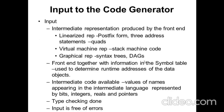Now we will see the input to the code generator. The output of the code optimizer is the optimized three-address statements, which are given as input to your code generator. So the input to the code generator is the intermediate representation in three-address format. We can have three representations of the three-address code intermediate representation.